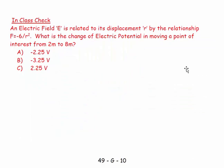Let's look at an example. An electric field E is related to displacement R by a given relationship. What is the change in electric potential in moving a point of interest from 2 to 8 meters? Let's visualize what this looks like — here is R and this is the electric field.